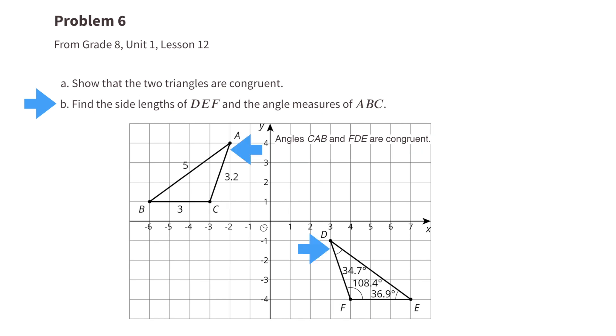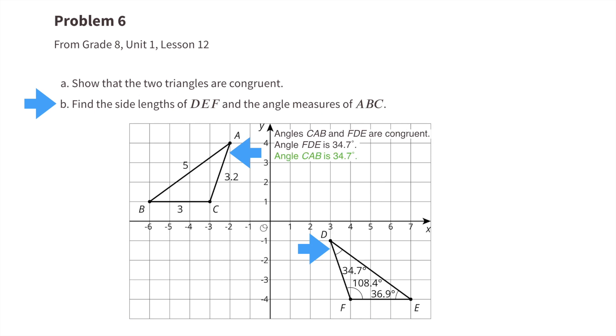Angles CAB and FDE are also congruent. Since angle FDE is 34.7 degrees, angle CAB would also be 34.7 degrees.